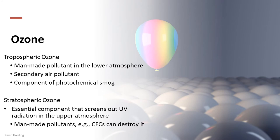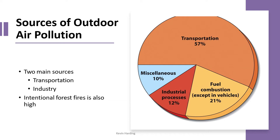Stratospheric ozone is not a pollutant — it is a good thing. However, man-made pollutants, particularly CFCs (chlorofluorocarbons), can destroy this stratospheric ozone. The tropospheric ozone is a pollutant, while the stratospheric ozone is beneficial. The hole in the ozone layer refers to the destruction of that beneficial stratospheric ozone by man-made pollutants.